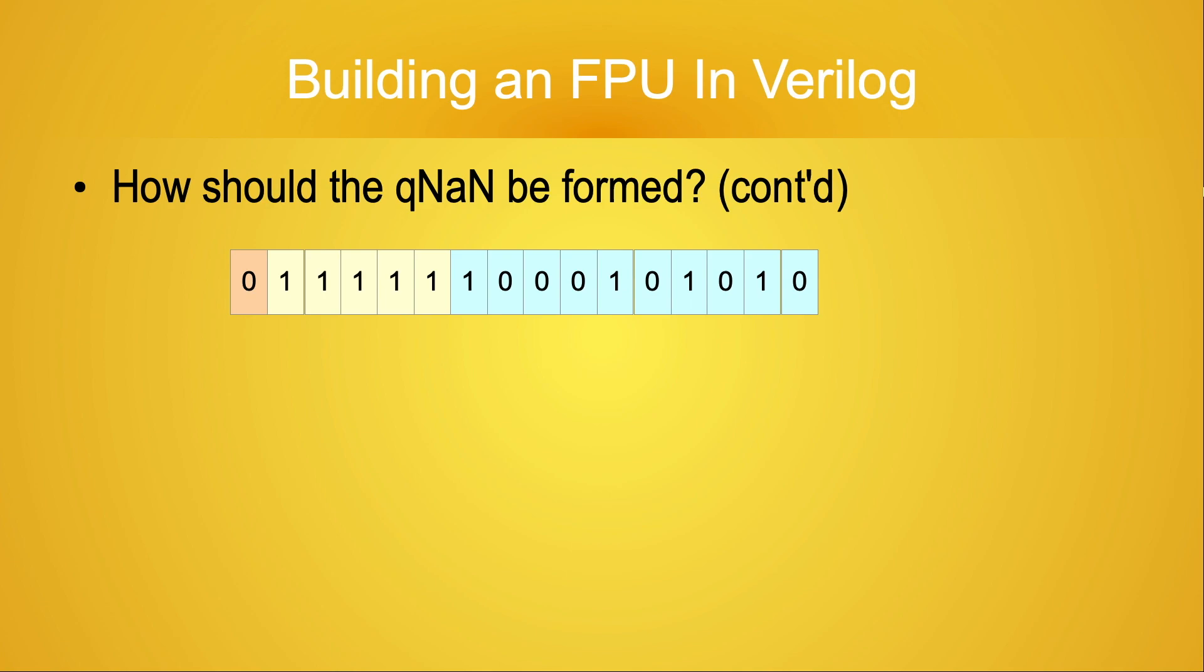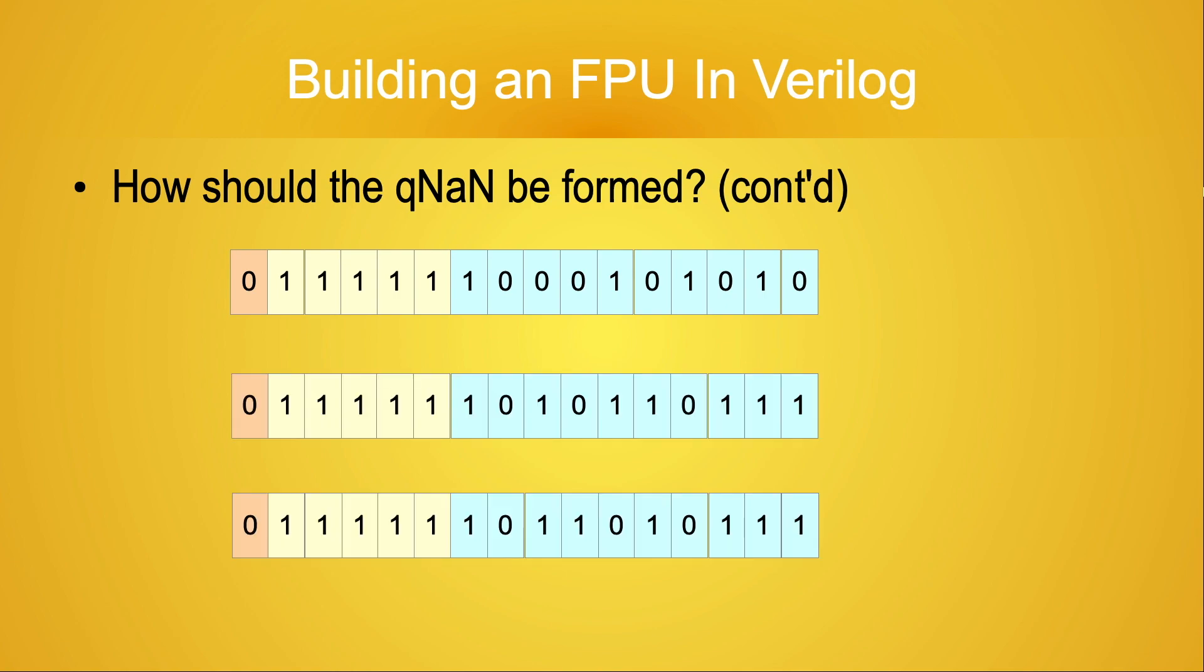Or, we could set bits 0 through 6 of the significand to the hexadecimal value 2a. Or, we could set bits 0 through 7 to either hexadecimal b7 or d7. Why these values?